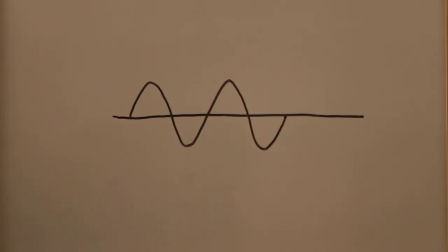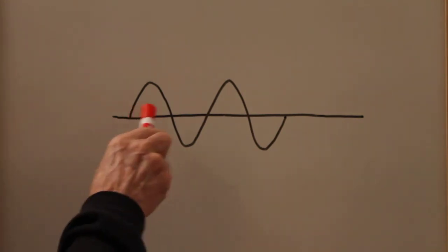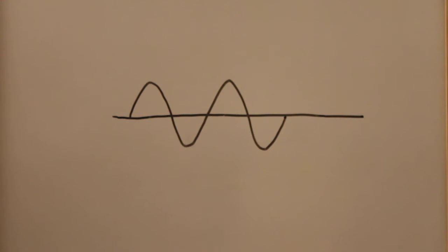Stan Gibalisco here with an explanation for final exam question number two in Teach Yourself Electricity and Electronics, fifth edition, page 661. The question asks us: if we have a perfect sine wave, phase opposition is equivalent to a phase shift of how much?